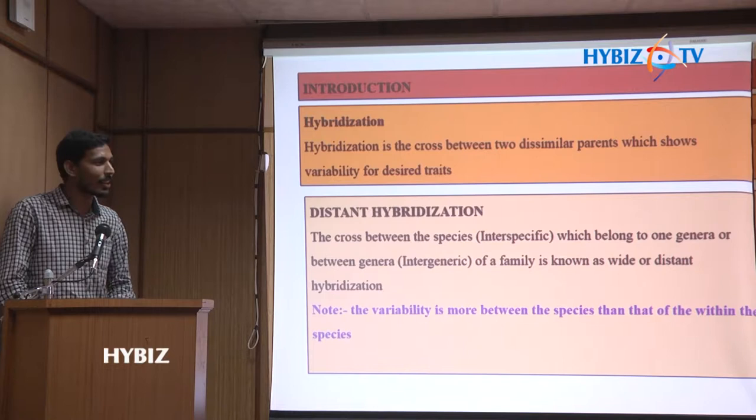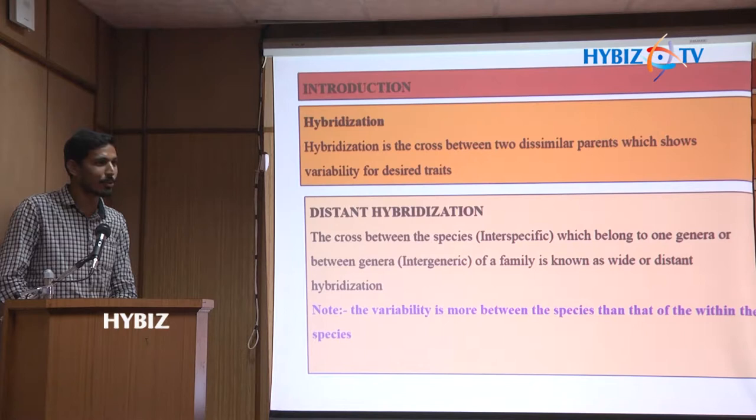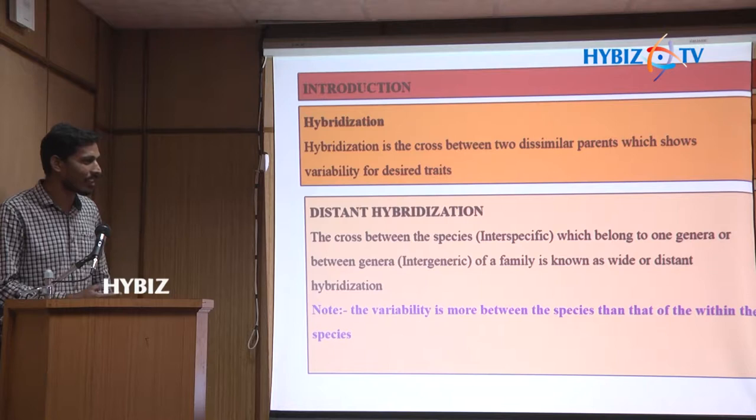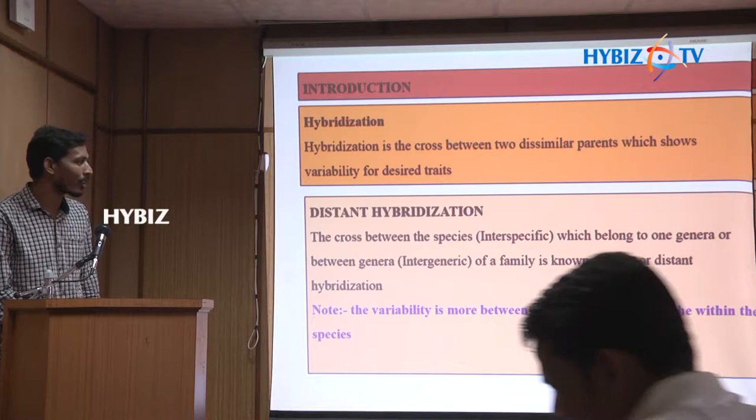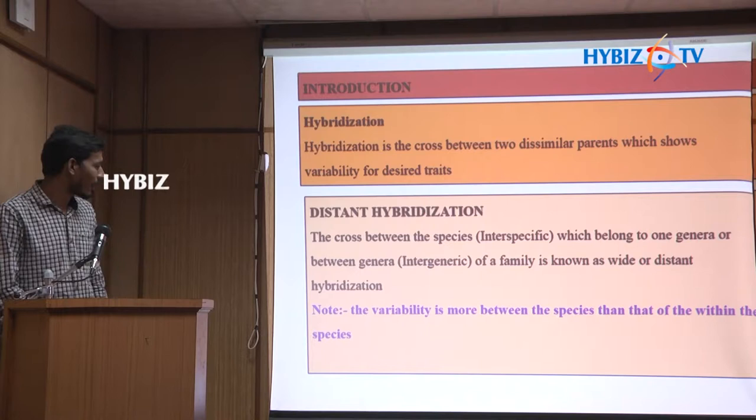Farmers are cultivating only one type of species — whichever gives the highest yield — and there is no variability as the years go on. Due to this lack of variability, we have to go to distant hybridization. Distant hybridization is a cross between species, called interspecific hybridization, or between genera, called intergeneric hybridization. Note that variability is more between species than within species.